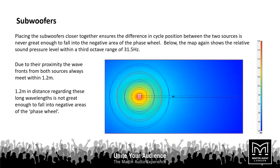If you can put those two subs together, you get a very different picture. Everything sums up nicely because the two are close together — there's not enough difference in arrival times of the two wavelengths to make any significant cancellations. You end up with a much more coherent, much more even frequency response throughout your venue. This is what Ease Focus is really good for — showing you exactly what interactions you're going to get between your subwoofers to enable better planning.